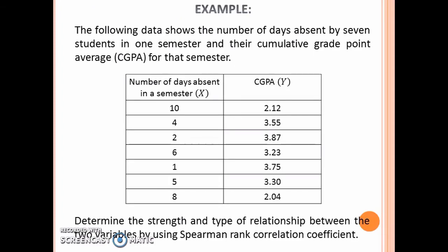Let's look at an example. The following data shows the number of days absent by seven students in one semester and their cumulative grade point average for that semester. Determine the strength and type of relationship between the two variables by using Spearman Rank Correlation Coefficient.